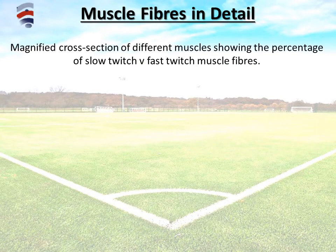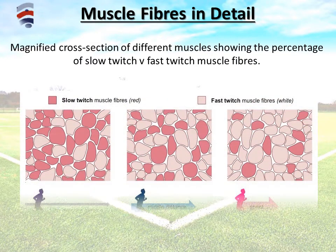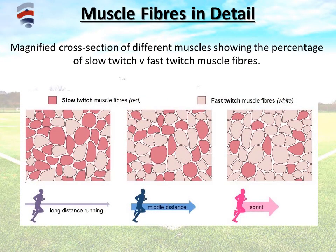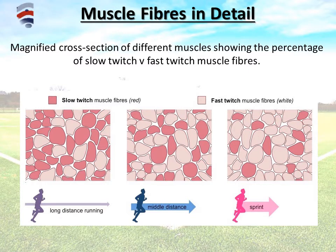Looking at this in more detail with a cross-section of the different muscle fibre types: the long-distance runner has more slow twitch muscle fibres than fast twitch. At the opposite end, the sprinter has far more fast twitch than slow twitch. And the middle-distance runner has a relatively even distribution of both slow twitch and fast twitch.